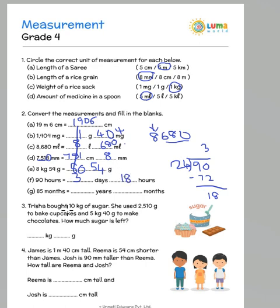85 months is how many years and months? Similarly, we know that in one year we have 12 months. So in 85 months if I take out 12 months each, it will make 7 years, which is 84 months, and you are left with 1 month.